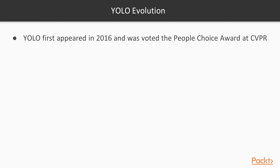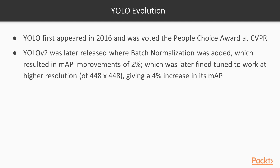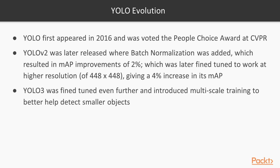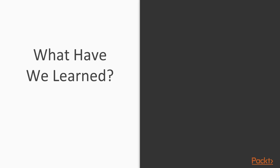YOLO won the People's Choice Award at CVPR. YOLOv2 introduced batch normalization, improving mAP by 2%, and was fine-tuned for higher resolutions, giving a further 4% mAP increase. YOLOv3 introduced multi-scale training to better detect smaller objects. YOLO and SSDs are essentially neck-and-neck as the two best types of object detectors available.